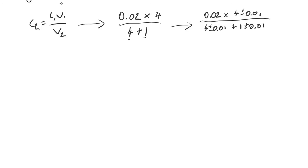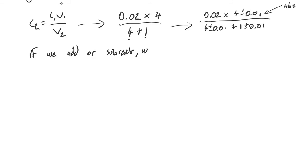We have absolute uncertainty here of 0.01, and that's from the micropipette — so that's absolute. Now there's a step here where we actually add some of these uncertainties together, and this is what you'll need to put in your sample calculation. If we add or subtract, we add absolute uncertainties.